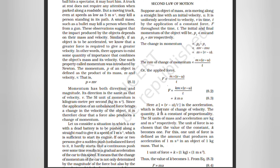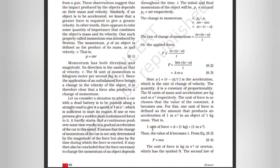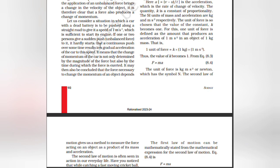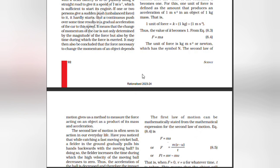The quantity k is the constant of proportionality. The SI unit of mass and acceleration are kilogram and meter per second squared respectively. The unit of force is so chosen that the value of constant k becomes one. For this, one unit of force is defined as the amount that produces an acceleration of 1 m/s² in an object of 1 kg mass. Thus 1 unit of force = k × 1 kg × 1 m/s², making k = 1. Therefore F = ma. The unit of force is kilogram meter per second squared, or newton, with symbol N.